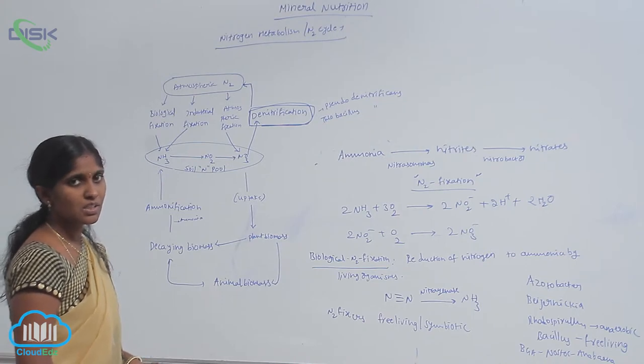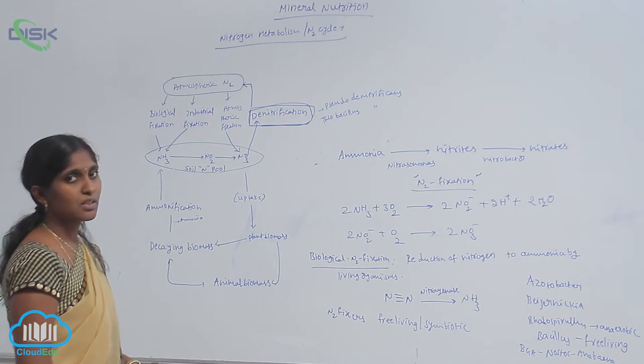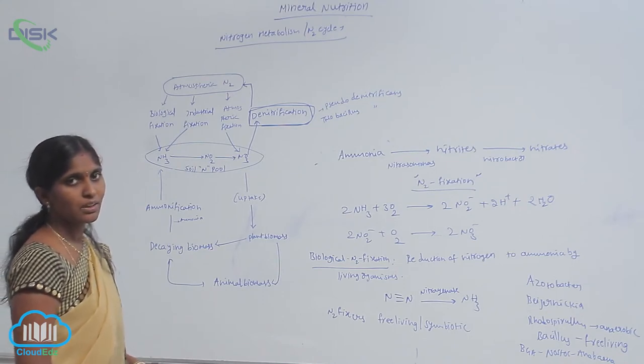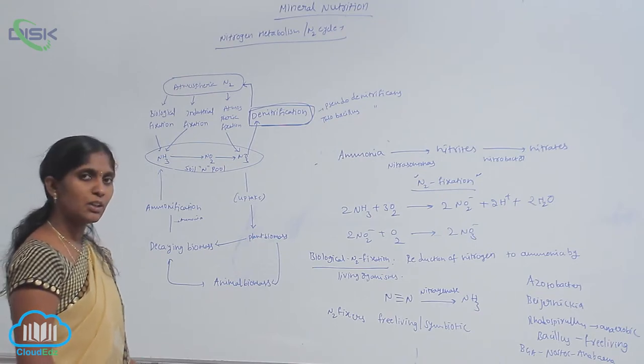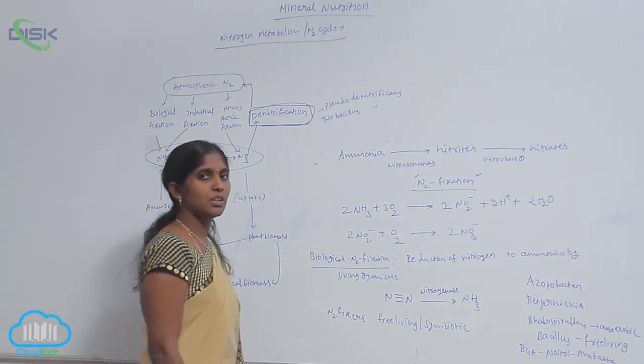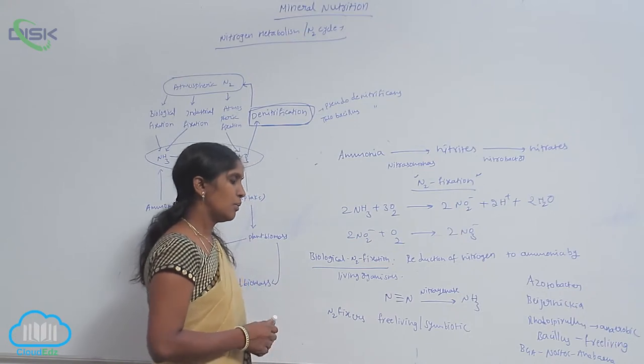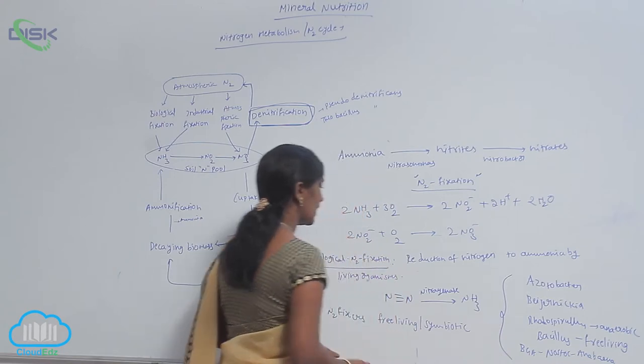The nitrogen fixers may be free-living bacteria or symbiotic bacteria. The best symbiotic bacteria is Rhizobium bacteria. The Rhizobium bacteria live in symbiosis with legume plants, and many of the bacterial forms are nitrogen fixers.